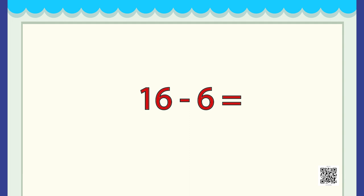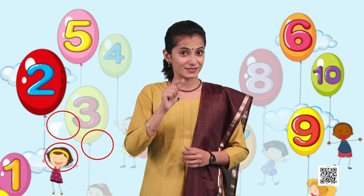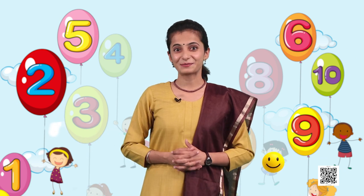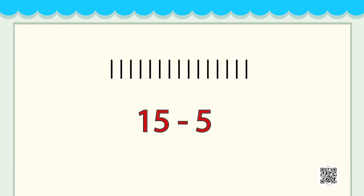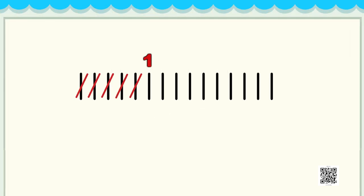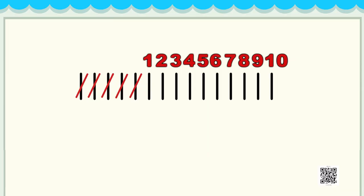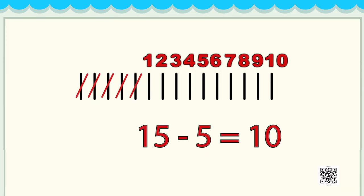Here is another task for you: 16 minus 6. But this task is for you, dear friends. Can you use any other small object for subtraction? Of course you can — you can draw small circles, small stars, or even small smileys. We are beginning with the sticks first. We have 15 minus 5, and we are left with 10 sticks. That means 15 minus 5 equals 10.